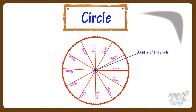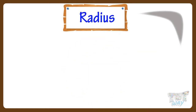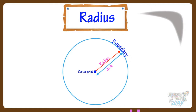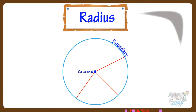Now let's learn what is a radius. A radius is a straight line from the center of the circle to the boundary of a circle. Or, radius is the distance between the boundary of the circle and the center of the circle. Let's draw any line from the center to the boundary — it will be a radius.